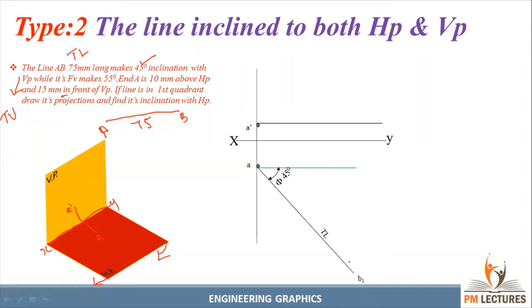Next, the front view makes 55°. Front view is above the XY line. From A dash point, use the protractor to mark the line at 55°. After drawing 55°, mark the locus of B.